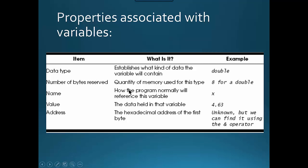Some properties associated with variables: variables have a data type, number of bytes reserved, name, value, and address. The data type establishes what kind of data will be stored. The number of bytes is dependent on the data type. The name is the identifier the program uses to reference that space of memory reserved at runtime. The value is what's stored in the variable, and the address is the actual memory address — you don't get the address until the program actually runs.